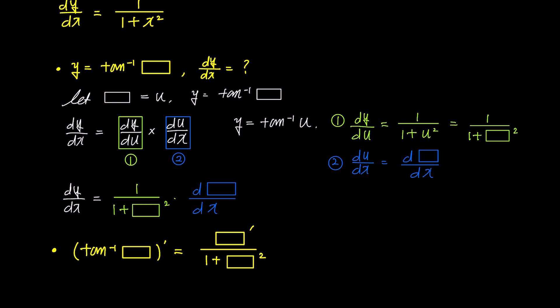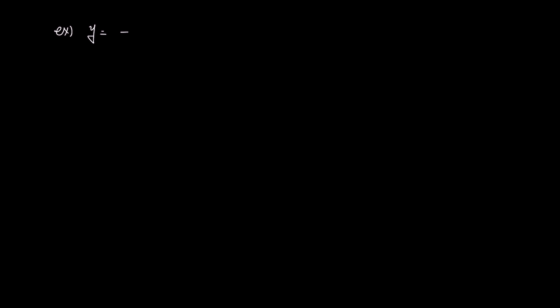Shall we work on an example together? Here, we have y equals arctangent 3x squared plus 11x. As you can see, the contents inside the box are 3x squared plus 11x. Since dy over dx is box prime over 1 plus box squared,